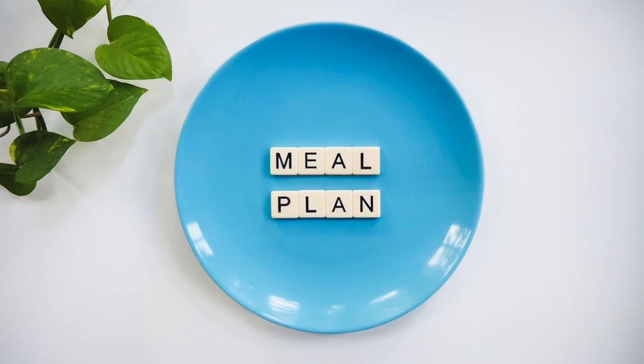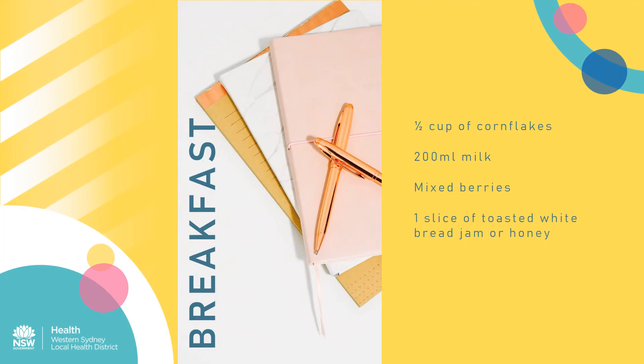The following meal ideas provide guidance on how to follow a diet that is low in TMA precursors while ensuring adequate intake of protein, dairy, fruit, vegetables and fibre. High protein and dairy foods have been spread over the day to help minimise symptoms. Breakfast consists of cornflakes — a non-bran, non-wholegrain cereal, making it lower in choline — with milk to provide calcium and protein, topped with mixed berries for fibre, and a slice of white toasted bread with jam or honey.